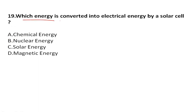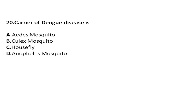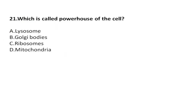Whose energy is converted into electrical energy by a solar cell? The right answer is solar energy. The carrier of dengue disease is the Aedes mosquito — please remember. Which is called the powerhouse of the cell? It is mitochondria — also called mitochondria.